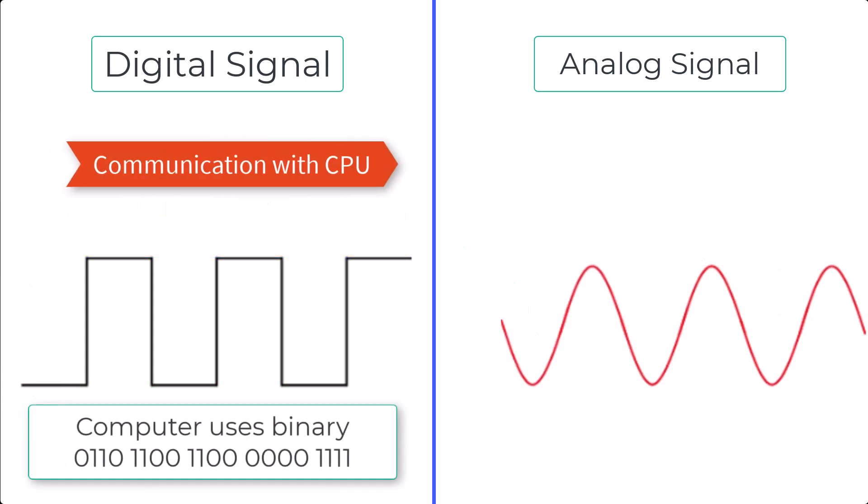Another reason to use digital signals is that computers naturally work with binary data. Computers interpret everything as a series of 0s and 1s, where 0 is off and 1 is on. This makes digital signals a perfect match for computer processing.